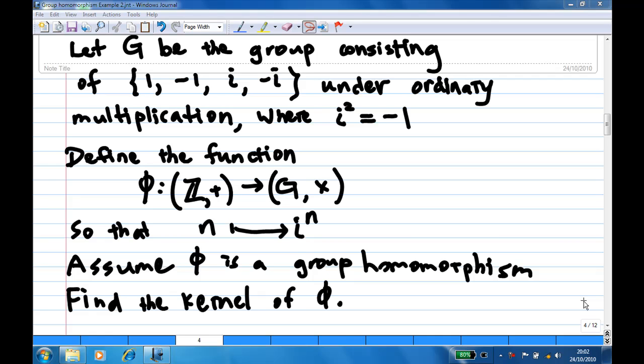Define a mapping from the group of integers under addition to G by n sent to i^n. Assume that this mapping φ is a group homomorphism. Find the kernel of φ.